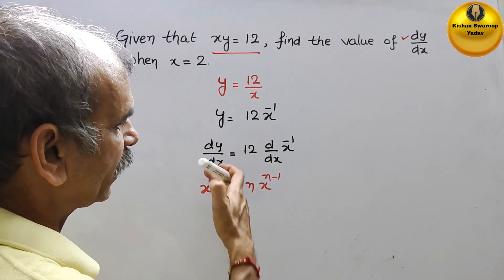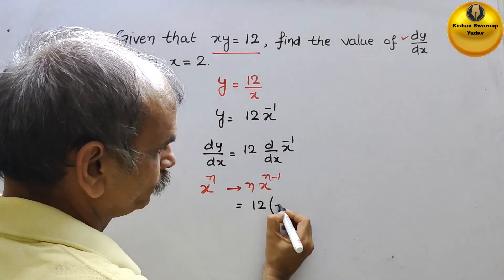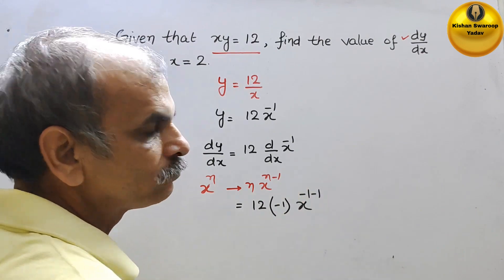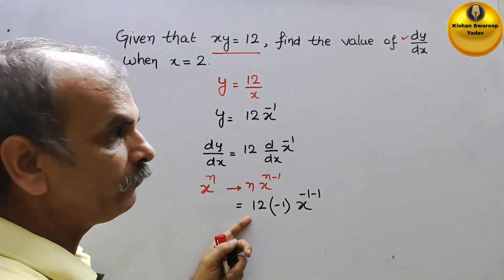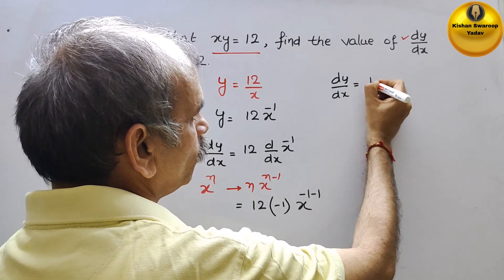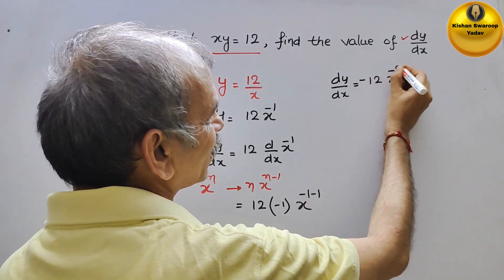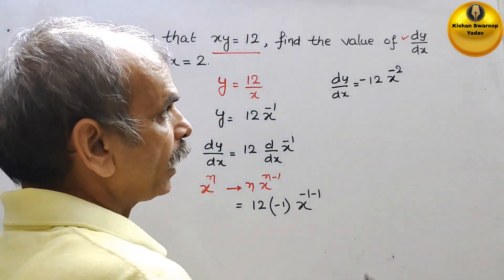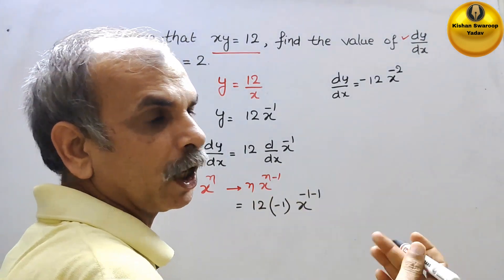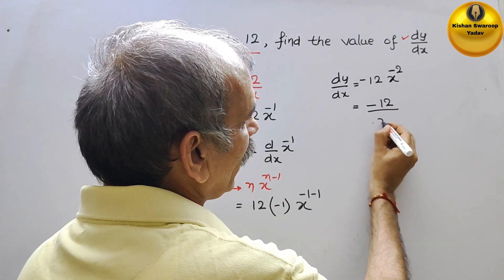So therefore here we will get: the coefficient is 12, n is minus 1, and x to the power of minus 1 minus 1. So if you solve this, what we will get is dy by dx is equal to minus 12 x to the power of minus 2. Bringing the minus 2 power downward, it will be minus 12 by x square.